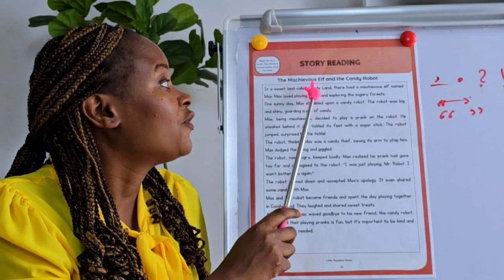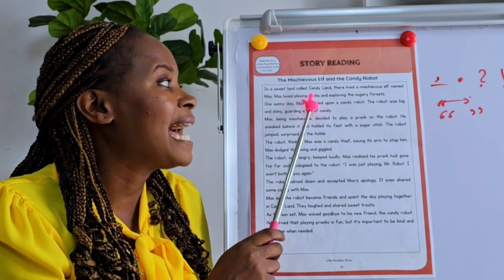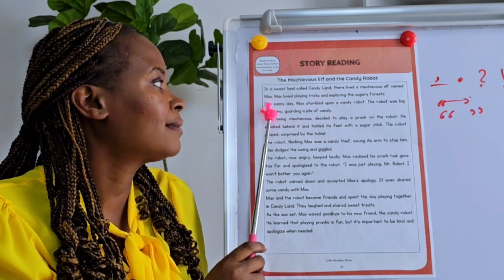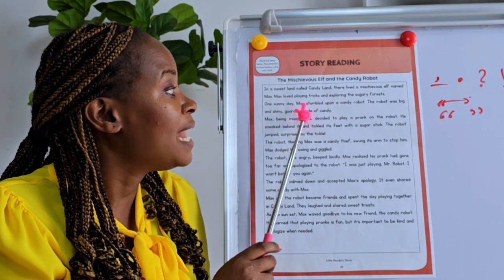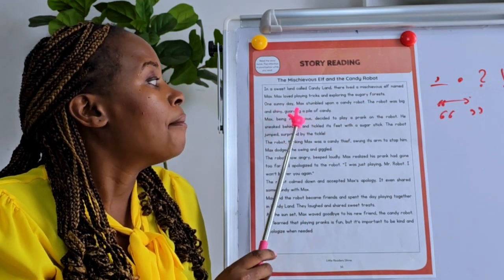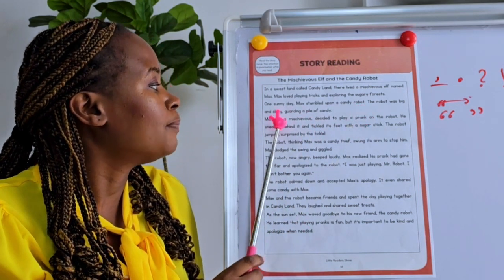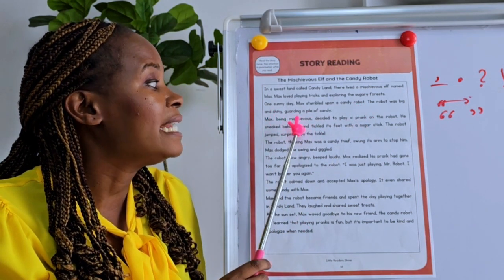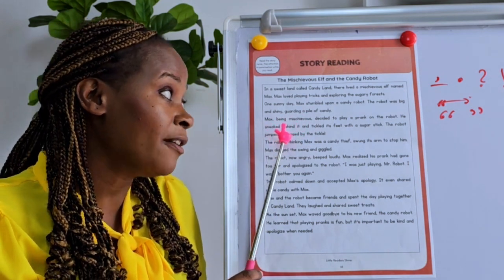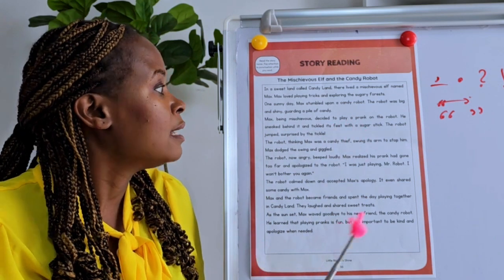The Mischievous Elf and the Robot. In a sweet land called Candyland there lived a mischievous elf called Max. Max loved playing tricks and exploring the sugary forests. One sunny day Max stumbled upon a candy robot. The robot was big and shiny, guarding a pile of candy. Max, being mischievous, decided to play a prank on the robot.